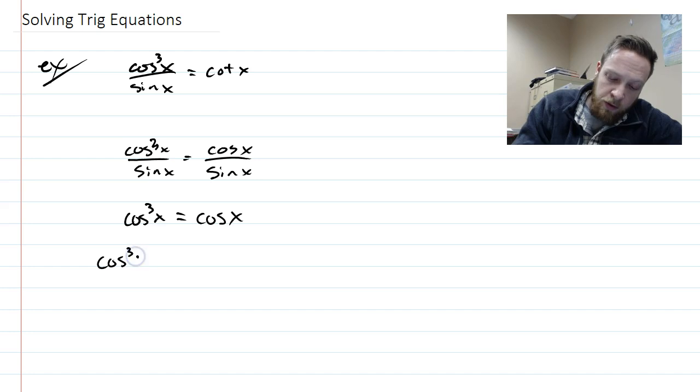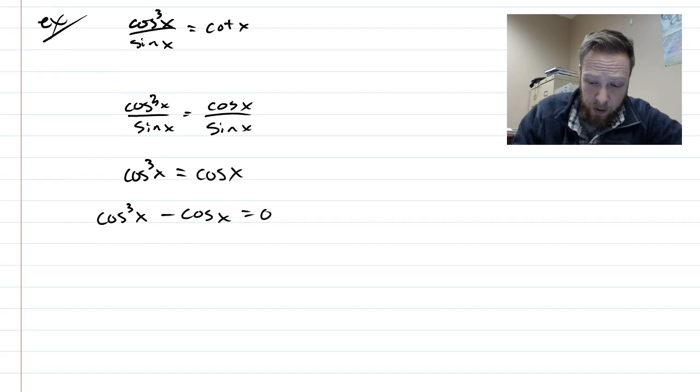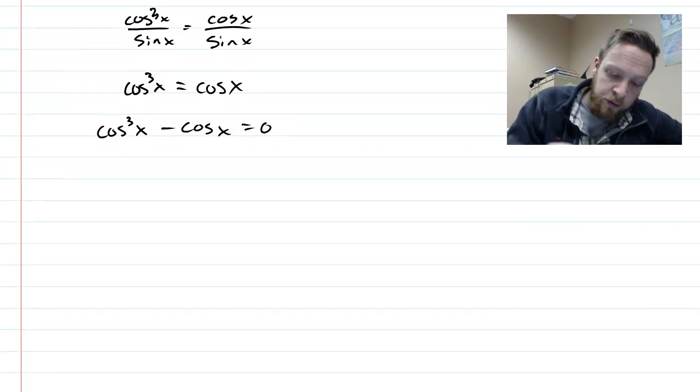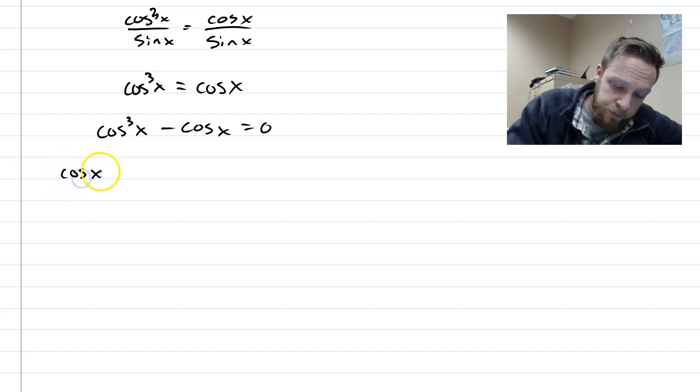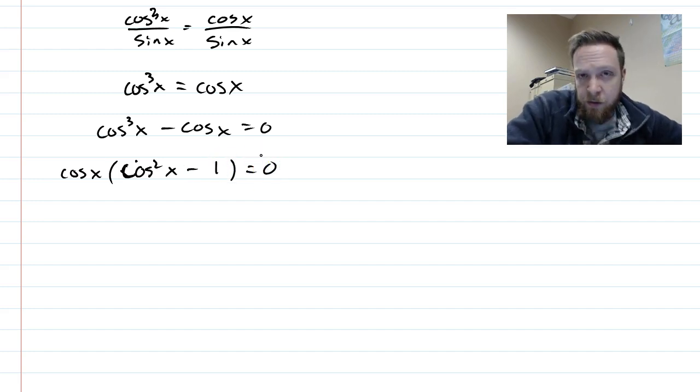So you have cosine cubed x minus cosine of x equals 0. Okay, now, I'm going to, just like in that x example that I just showed you, factor. Cosine squared minus 1 equals 0. I took in cosine out. And so in this one, you're just pulling a GCF of cosine out, but sometimes you're going to have to factor like we had talked about, where it's actually quadratic in disguise, and you might have to do a little more work.